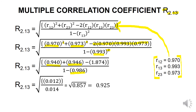Solving the numerator: 0.940 added with 0.946, then reduced by 1.874, gives 0.012. In the denominator, 0.986 subtracted from 1 gives 0.014. Dividing 0.012 by 0.014 under the square root gives 0.857. The square root of 0.857 is 0.925, which means the multiple correlation coefficient R2.13 is equivalent to 0.925.